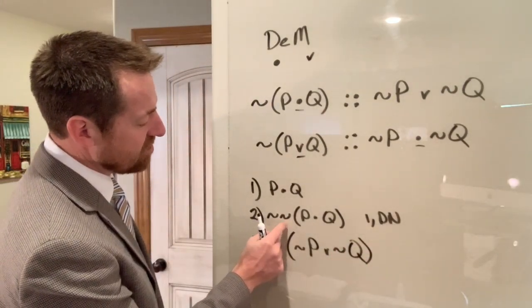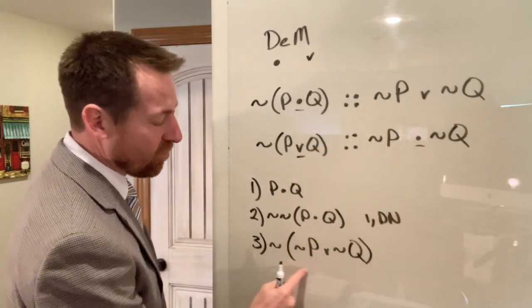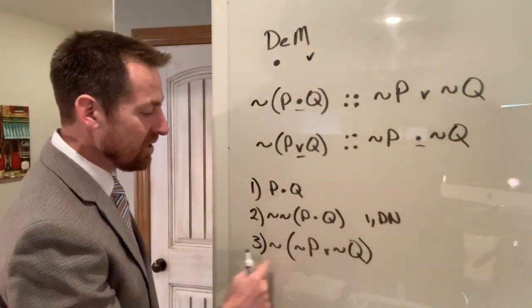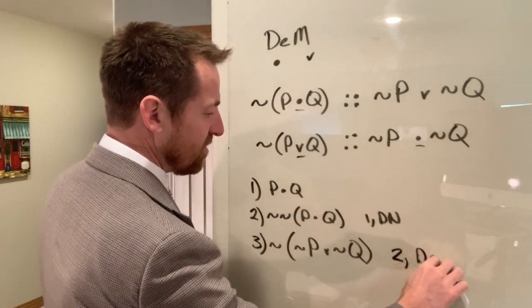I had two negations. So I took one of them because I'm only allowed to move one in and I applied DeMorgan's to this part of a line. Remember, you can apply equivalence rules to part of a line to make this change. So this follows from line two by rule of DeMorgan's.